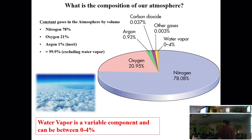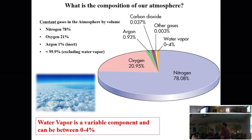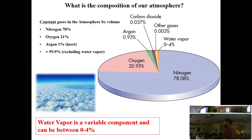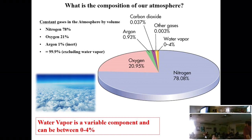What is the atmosphere made of? Almost 99% of it is nitrogen and oxygen. The third gas, which most people don't think of, is argon — about one percent of what you're breathing every day is argon.